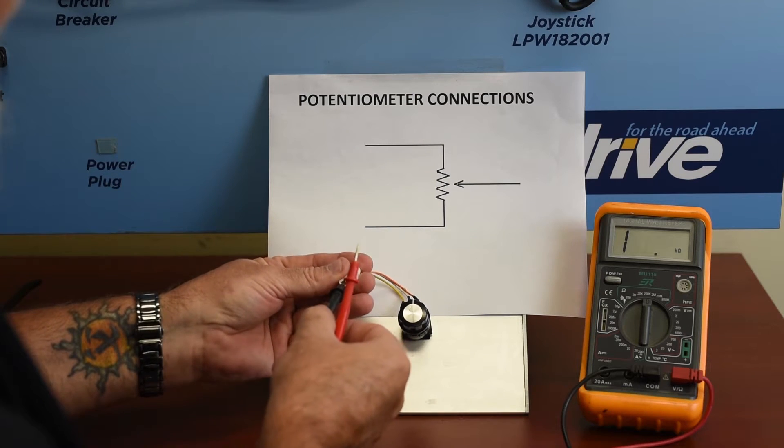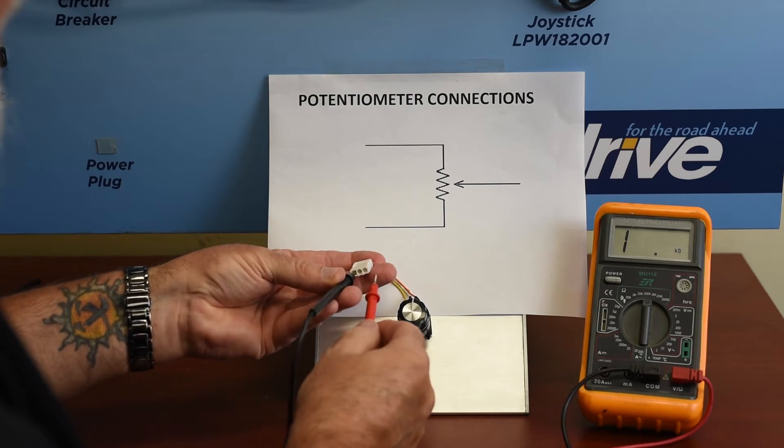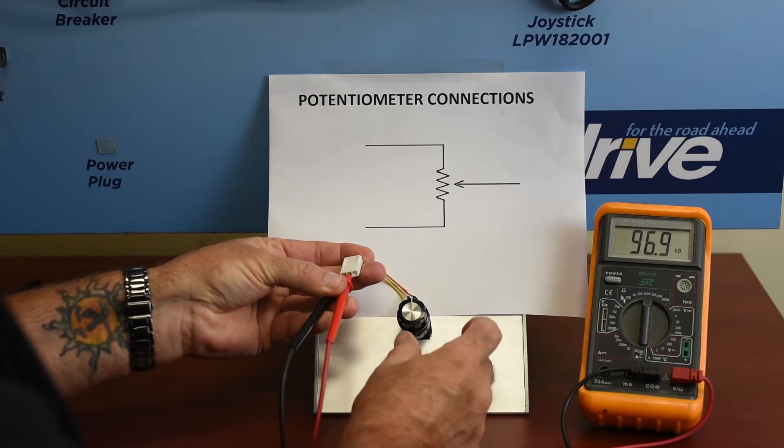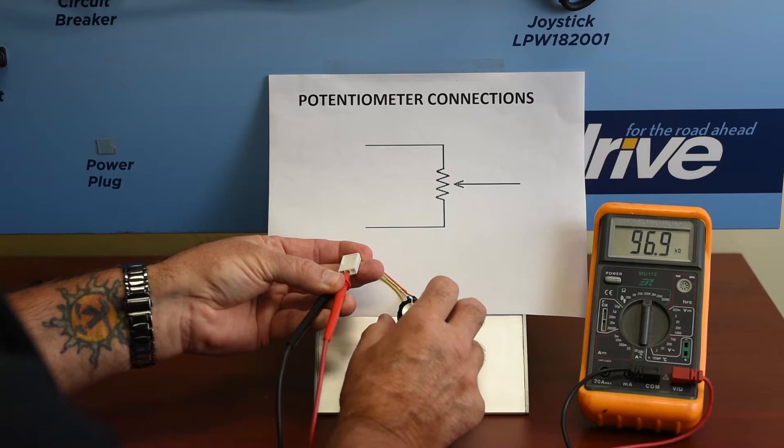And then we're going to go from the outside to the middle. And we're seeing 96.9k, which is fine.